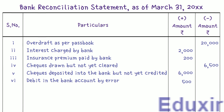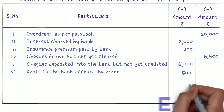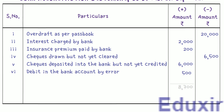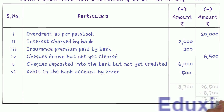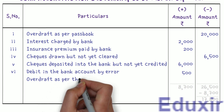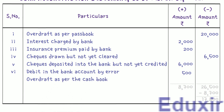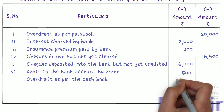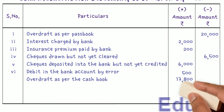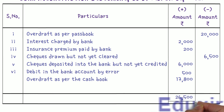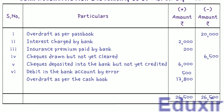We have now completed recording all the details in the bank reconciliation statement. The total of all entries in the plus amount column is ₹8,700, and the total in the minus amount column is ₹26,500. Subtracting ₹8,700 from ₹26,500 gives ₹17,800 — this is the cashbook overdraft balance. We record 'Overdraft as per Cashbook' at ₹17,800 in the plus amount column, making both columns total to ₹26,500. Thanks for watching.